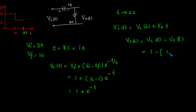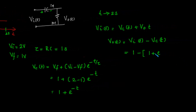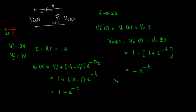The capacitor voltage is 1 + e^(−t), so v_out(t) = 1 − (1 + e^(−t)) = −e^(−t). Substituting t = 2 seconds, v_out at t = 2 seconds equals −e^(−2) volts. This question was asked in GATE instrumentation.